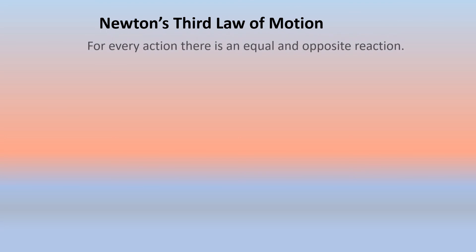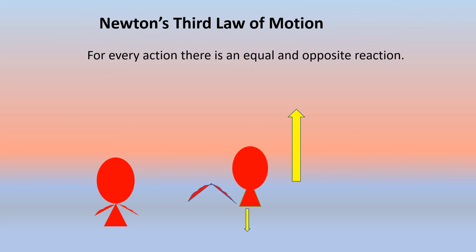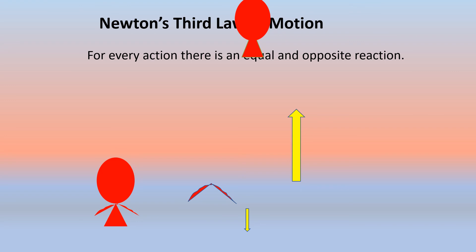Now let's see another example of Newton's third law. Here we have a balloon that is tied tight. What happens when you remove the string? The balloon moves up. The air inside the balloon is pushed downward, whereas the balloon rises up — that is an equal and opposite reaction. The third law states that for every action, there is an equal and opposite reaction.